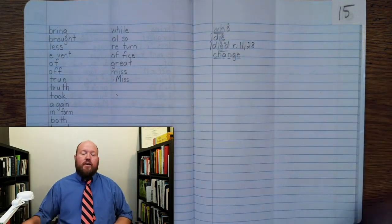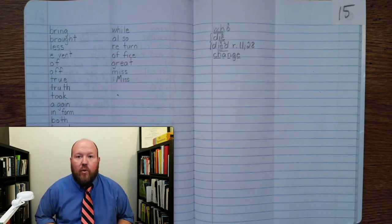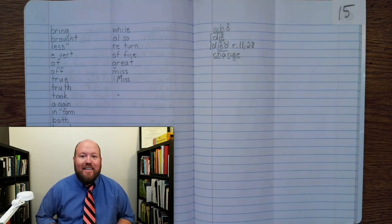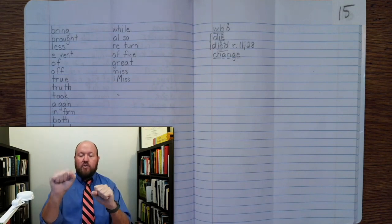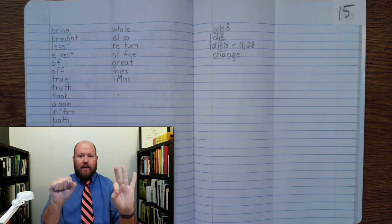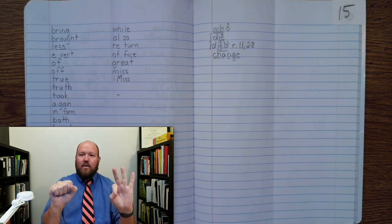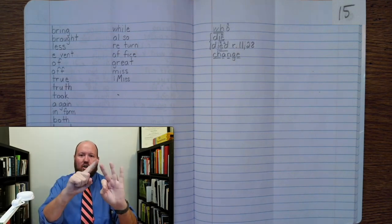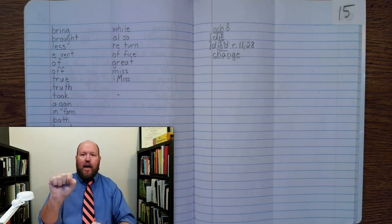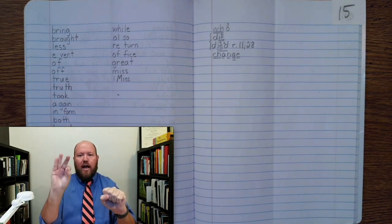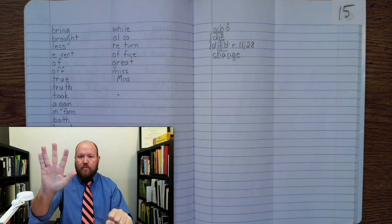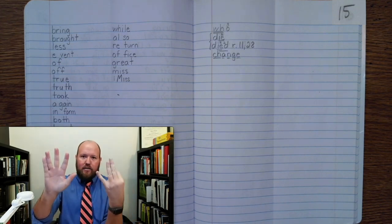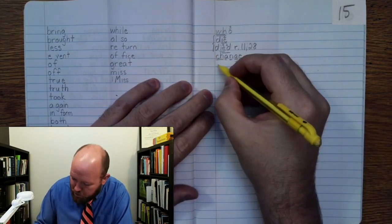Now the next word is CHANGING. So we could say that the weather is constantly changing. Changing. Base word change, ending ING. I write change without the silent final E because my ending ING starts with a vowel. Change-ing: C-H-A-N-J, no E, I-NG. Changing. Write it.